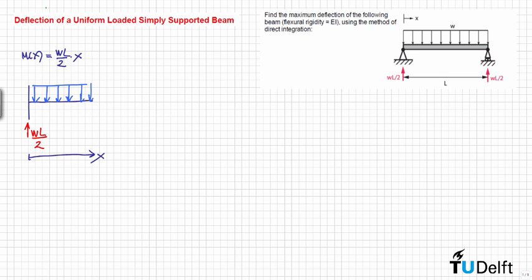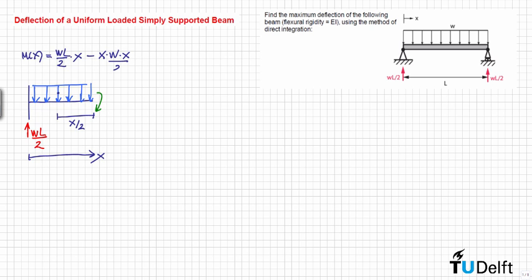The contribution of the distributed load creates a moment in the opposite sense, so the internal reaction is negative. This is a rectangular load, so the area of this load is equal to x times w, and the distance is from the centroid of this area to point x, which is x divided by 2. Therefore, the total moment equation is: M = wL/2 · x − wx²/2.